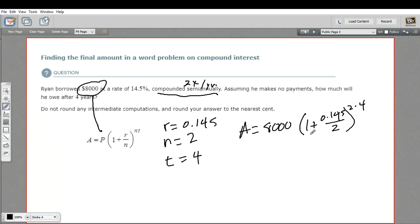So let's see if we can simplify this a little bit. That 0.145 divided by two, that's going to be 0.0725. So this is our principal times 1.0725. And that's raised to the two times four, that's the eighth power.